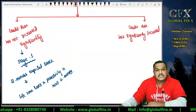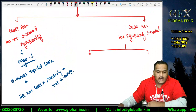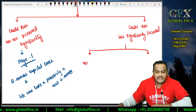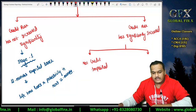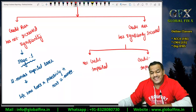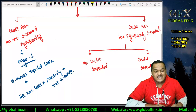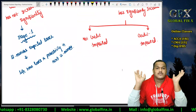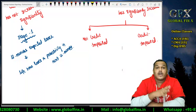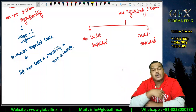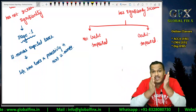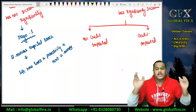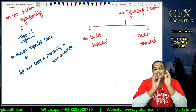Where credit risk has increased significantly, there are two types of situations: Stage 2 and Stage 3. Stage 2 is where there is no credit impairment — not credit impaired. Stage 3 is where there is credit impairment. In simple language, credit impairment means there is definitive proof that there will definitely be losses — you know for sure that this borrower will not be able to repay you.